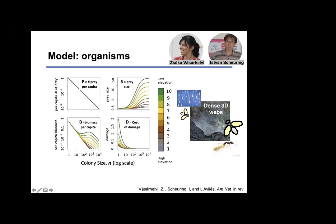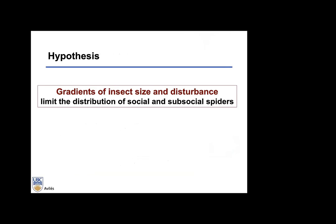We model the organisms and their responses to abiotic and biotic factors. The number of insects per capita declines with colony size; prey size increases with colony size but only in habitats where large insects are available. Biomass per capita — number of prey times their size — peaks at some intermediate colony size. To calculate offspring produced, we also account for damage from rains or predators: larger colonies recover better from damage, and damage is greatest in the lowland tropical rainforest. Offspring = biomass per capita × colony size − damage.